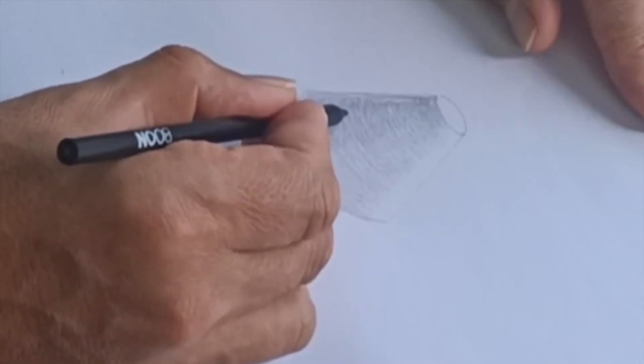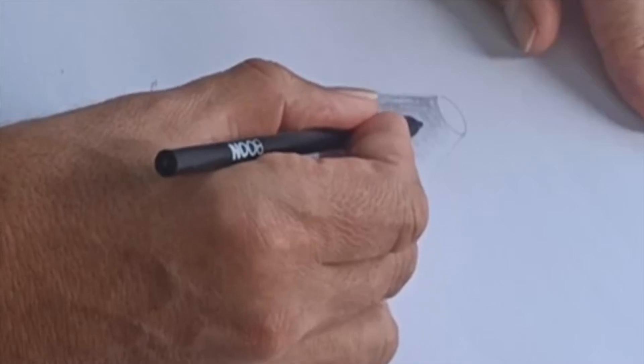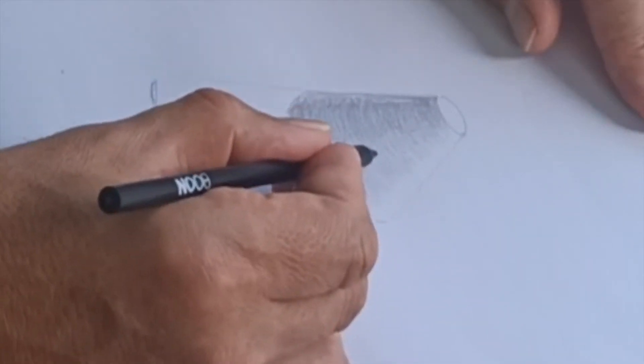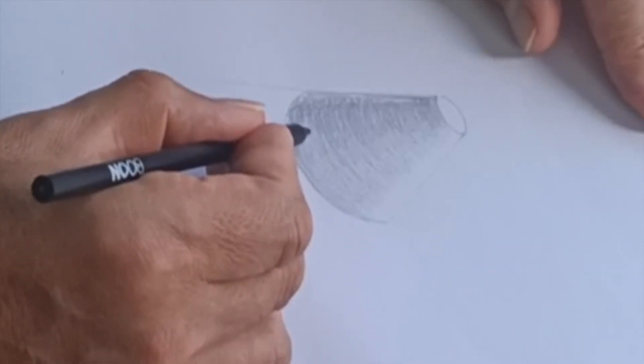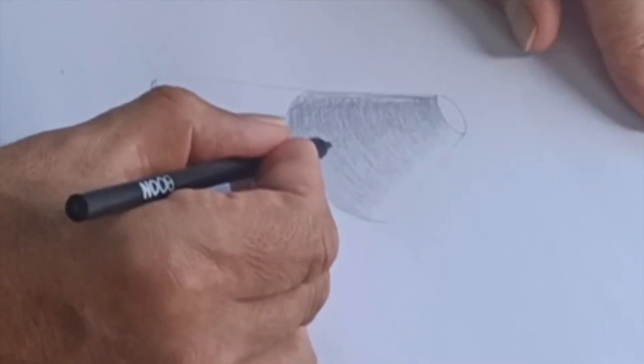Now I'm going to get a little darker here. 2B pencil seems to have a softer feel about it. The 4Bs are a lot darker.